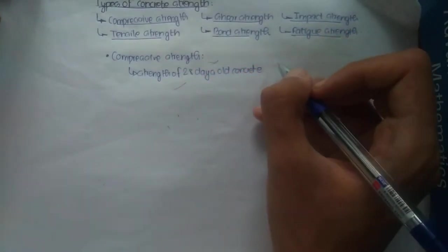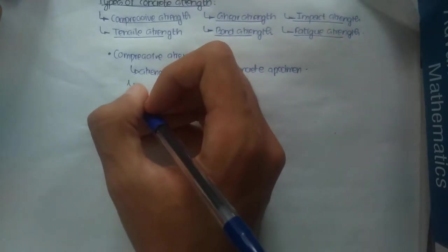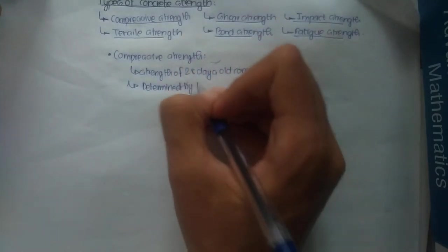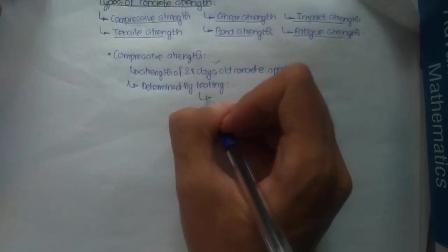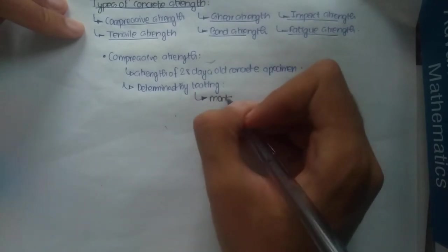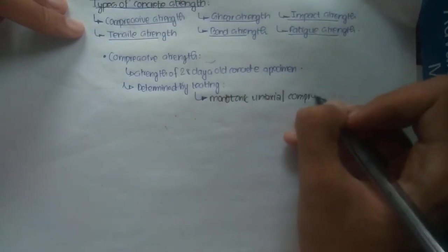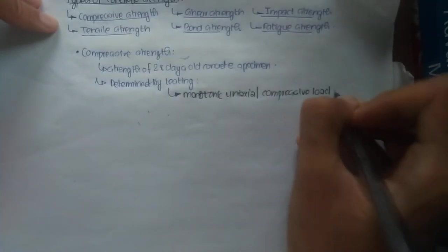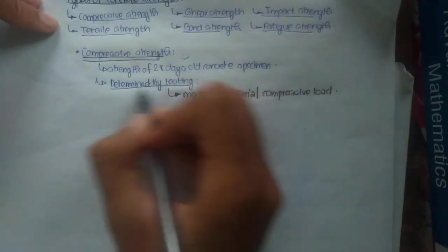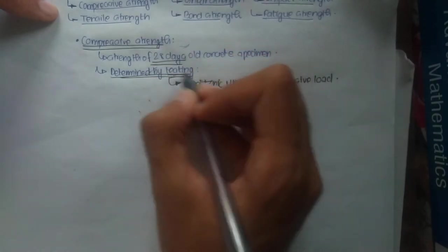Compressive strength is determined by testing. For its testing, we use a machine called a monotonic uniaxial compressive load device. With the help of this device, the compressive strength of any concrete is experimentally determined at 28 days.